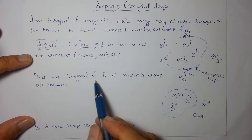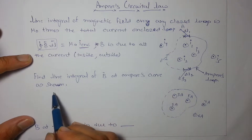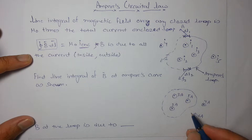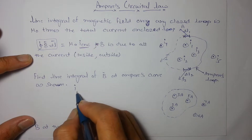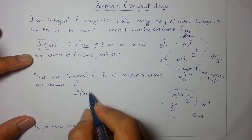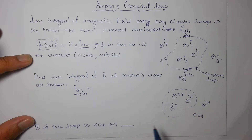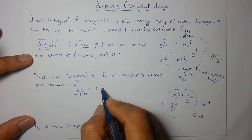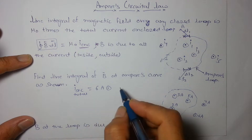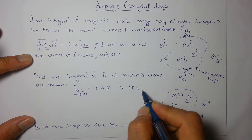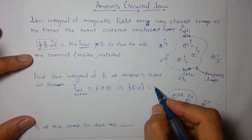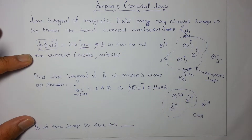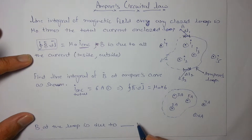Application: Find the line integral of magnetic field at the curved surface as shown. There are two or three currents enclosed. The total I enclosed: we have 5 and 3 giving 8, and minus 2 for an inward current, so net enclosed current is 6 ampere outward. Therefore B dot dl over the closed loop will be mu-naught times 6.